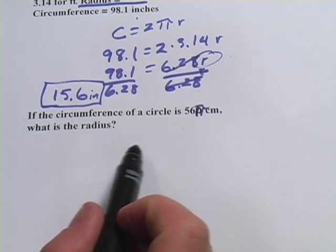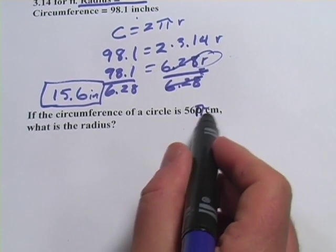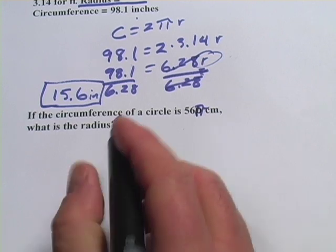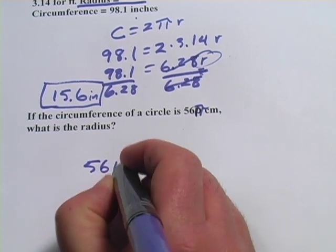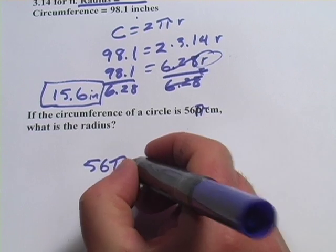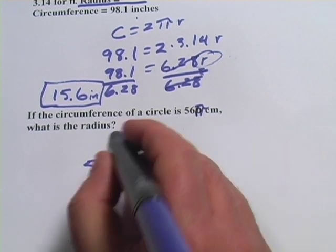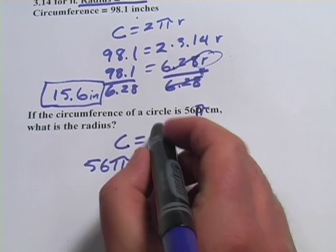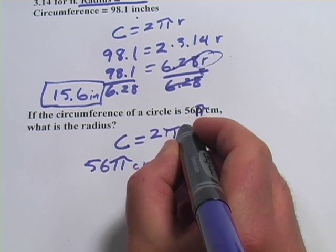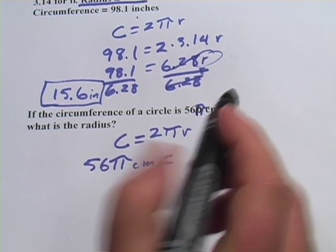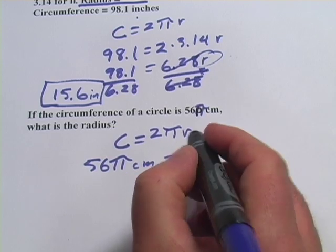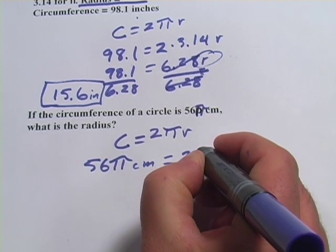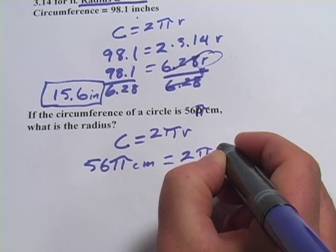Let's try one more. This one says, if the circumference of a circle is 56π centimeters, what is the radius? So we would have 56π centimeters for our circumference, and I'm just using this formula: circumference equals 2 times π times the radius. So there's our circumference, 56π centimeters equals 2 times π times the radius.